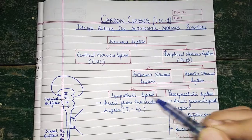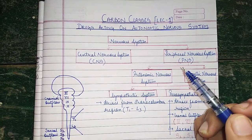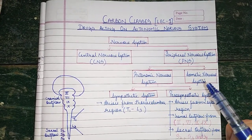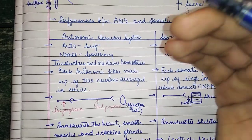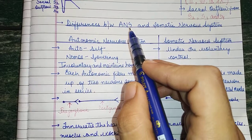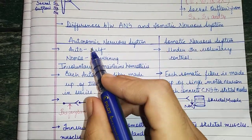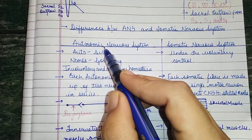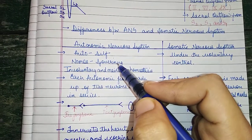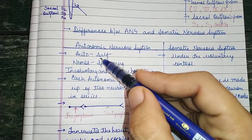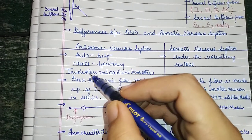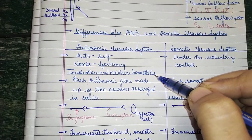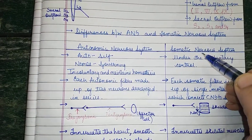Now we are going to talk about the differences between the autonomic nervous system and the somatic nervous system. The word 'autonomic' comes from 'autos' meaning self and 'nomos' meaning governing — so it is a self-governing system. As we know, it is involuntary and maintains homeostasis, meaning it is not under our control. In contrast, the somatic nervous system is voluntary and is under our control.